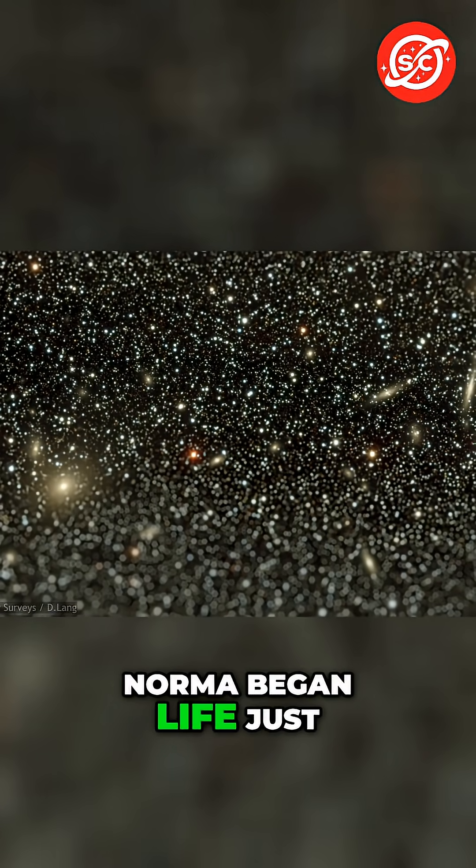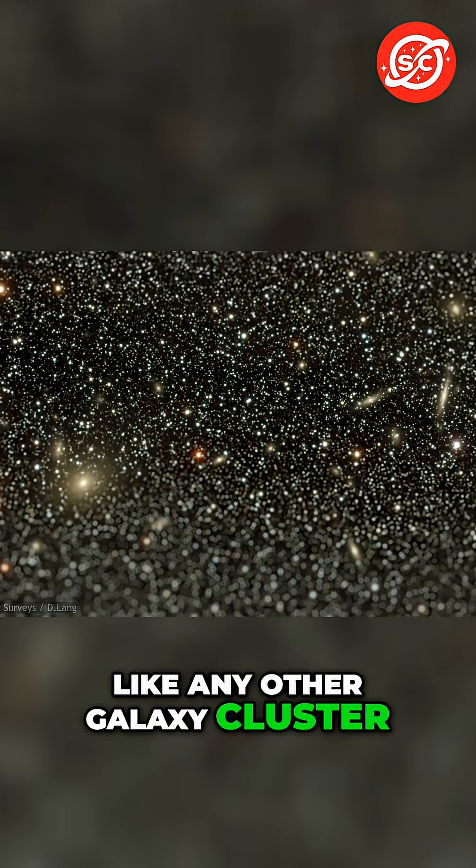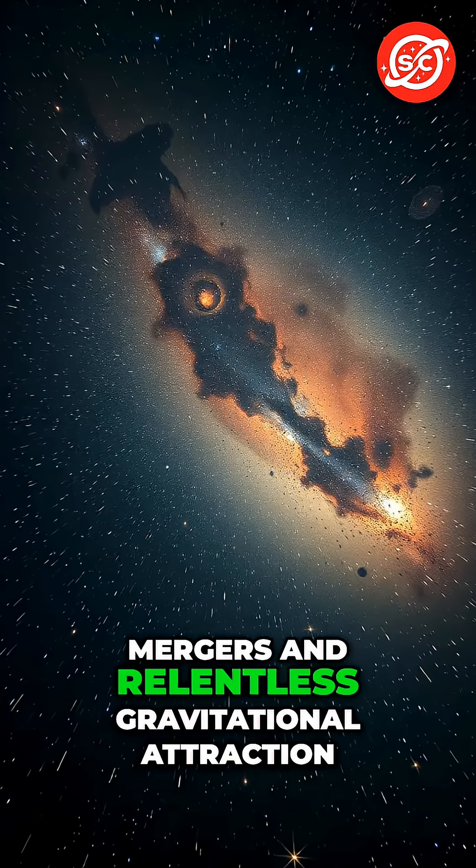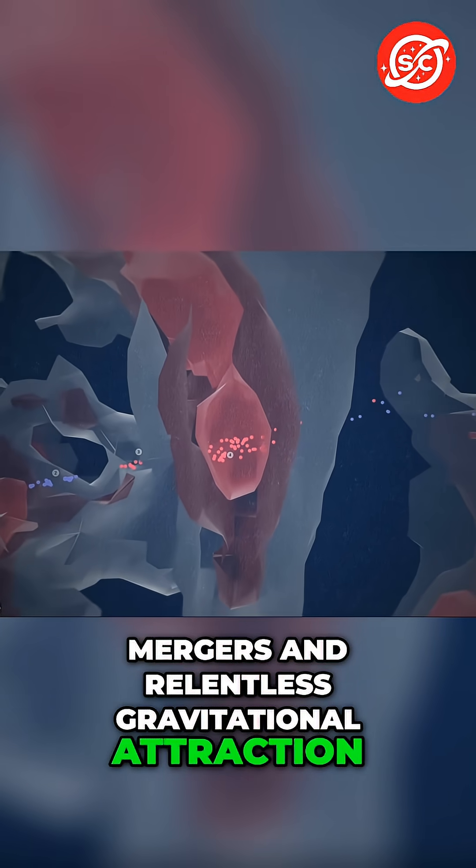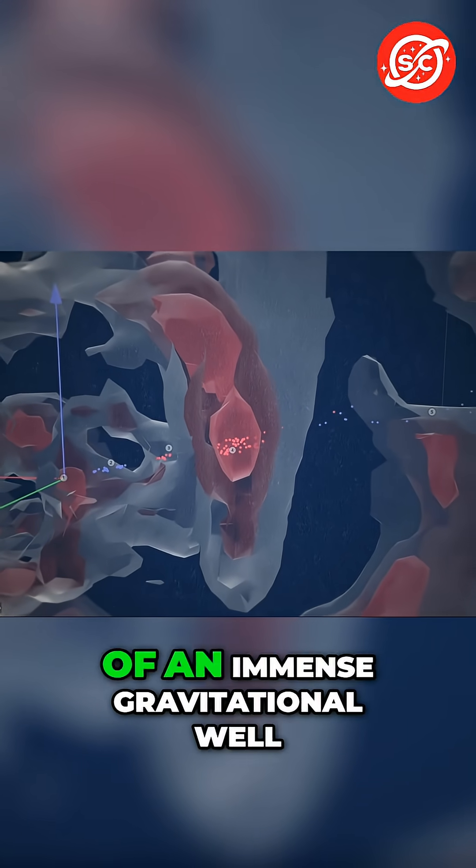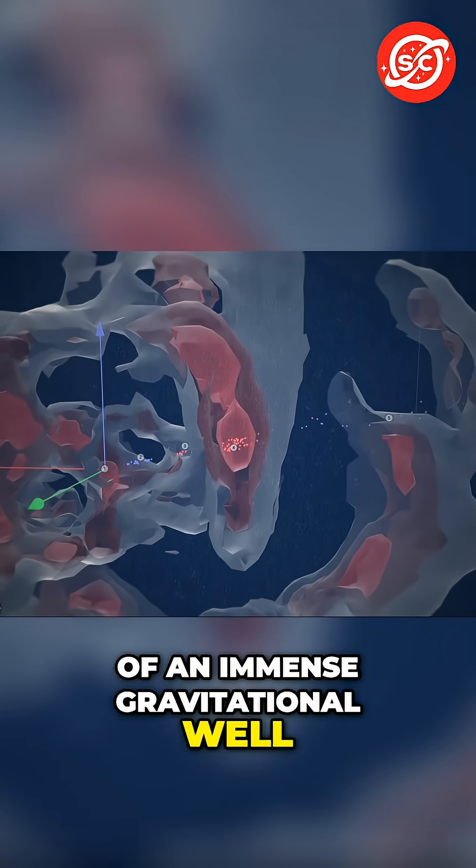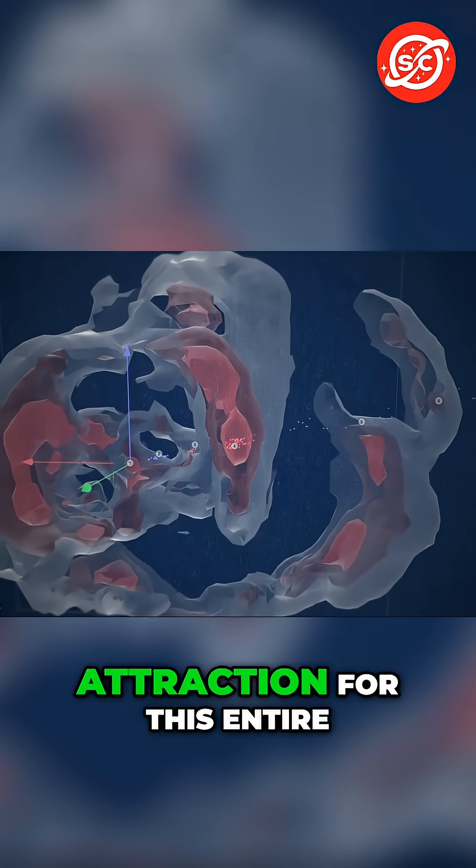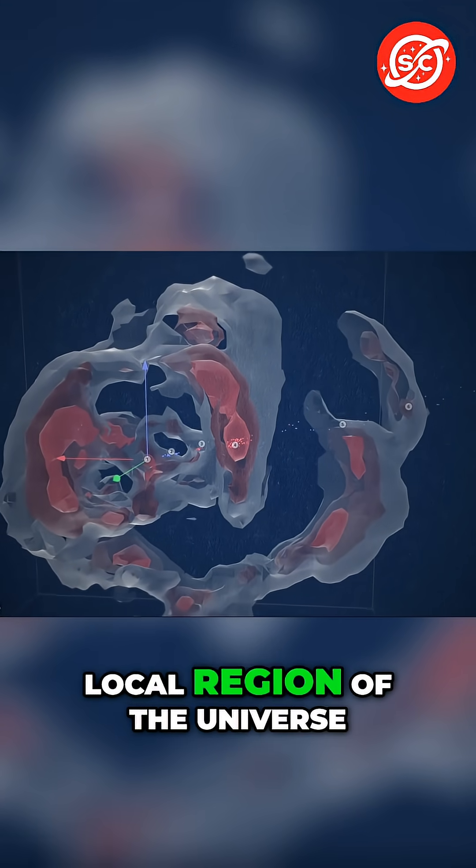Norma began life just like any other galaxy cluster, the result of countless mergers and relentless gravitational attraction. But it happened to sit at the bottom of an immense gravitational well, the single point of attraction for this entire local region of the universe.